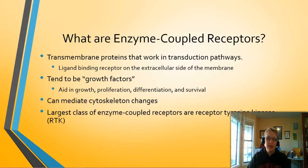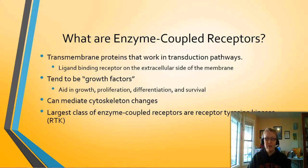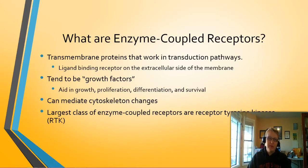So what are enzyme coupled receptors? They're transmembrane proteins that work in transduction pathways. As opposed to GPCRs which have seven pass-throughs, enzyme coupled receptors tend to have only one, which means they typically form a dimer when they bind to their signal. These enzyme coupled receptors tend to be growth factors involved in growth, proliferation, differentiation, and survival — which makes them huge targets in cancer pathways, because if a growth factor gets out of control, you end up with a tumor.